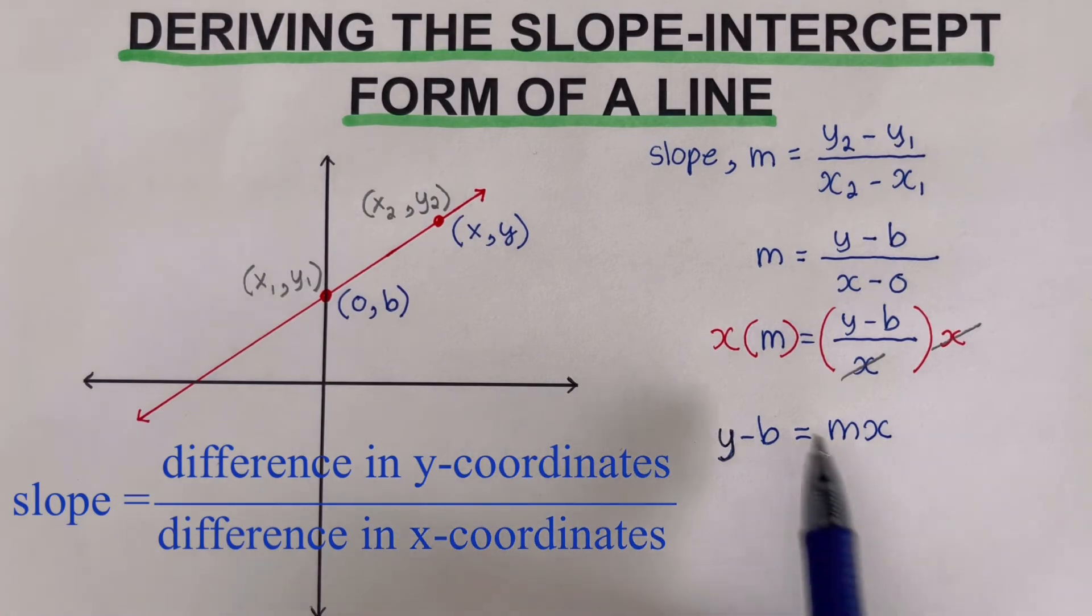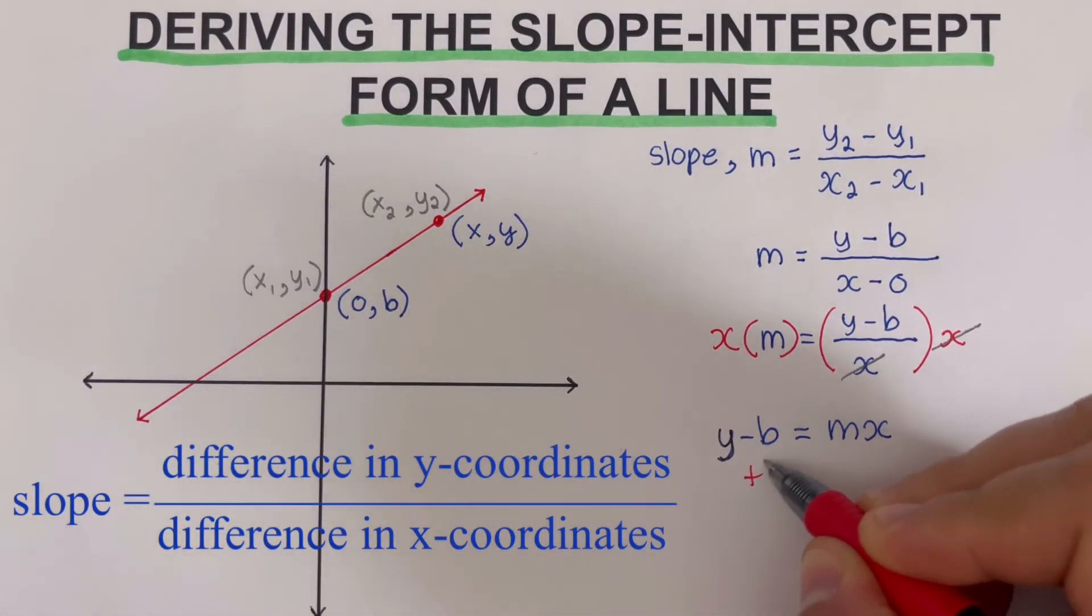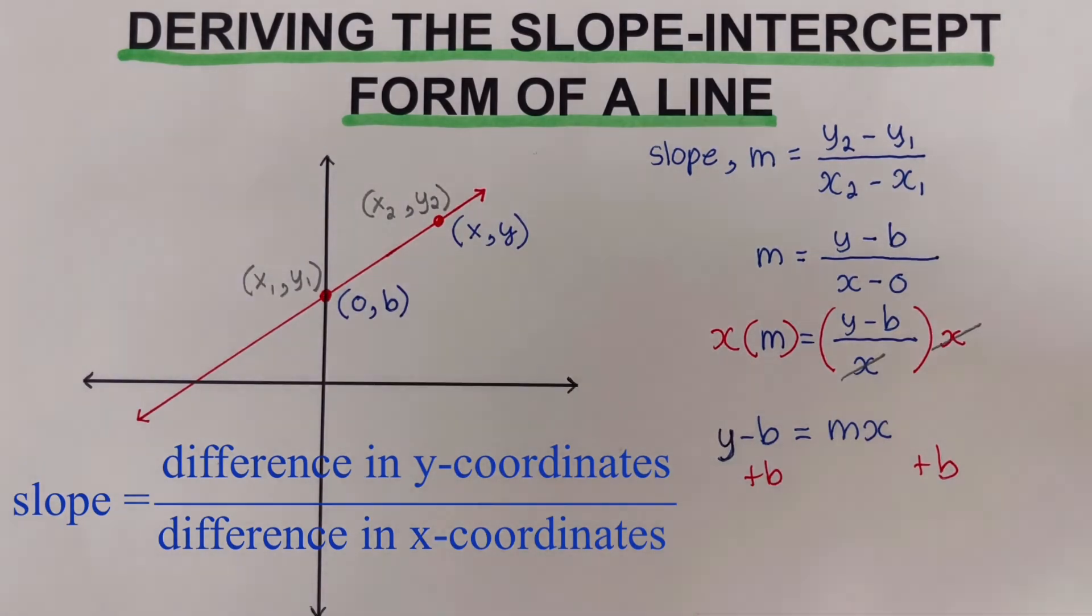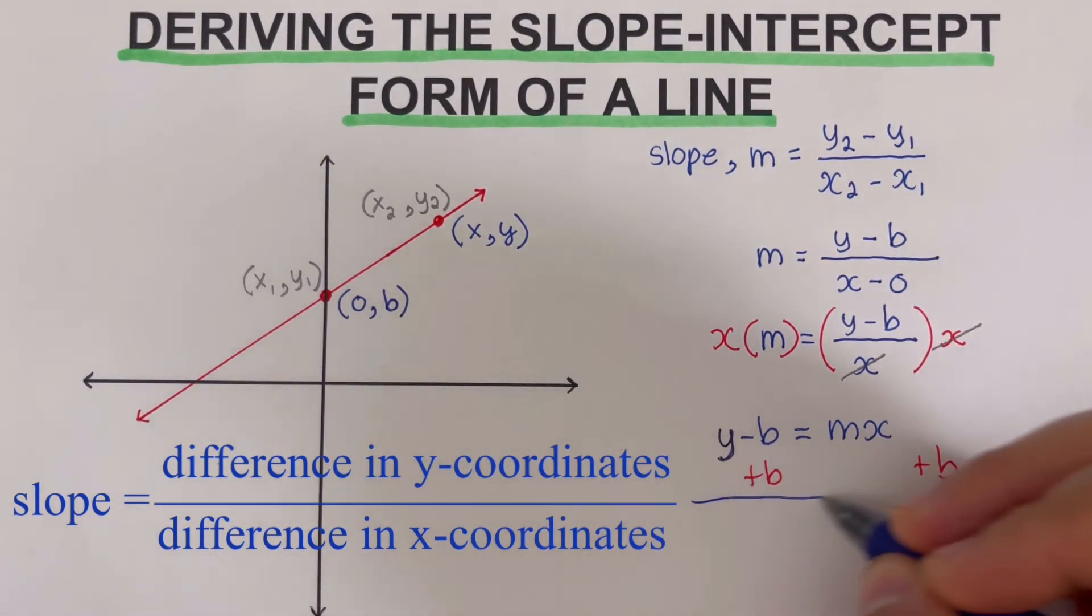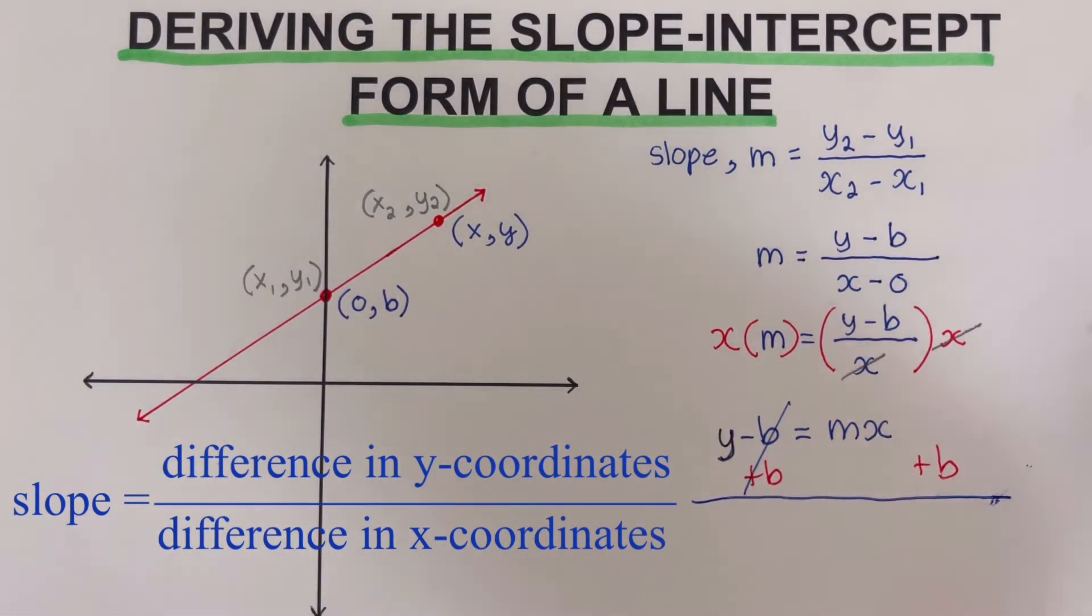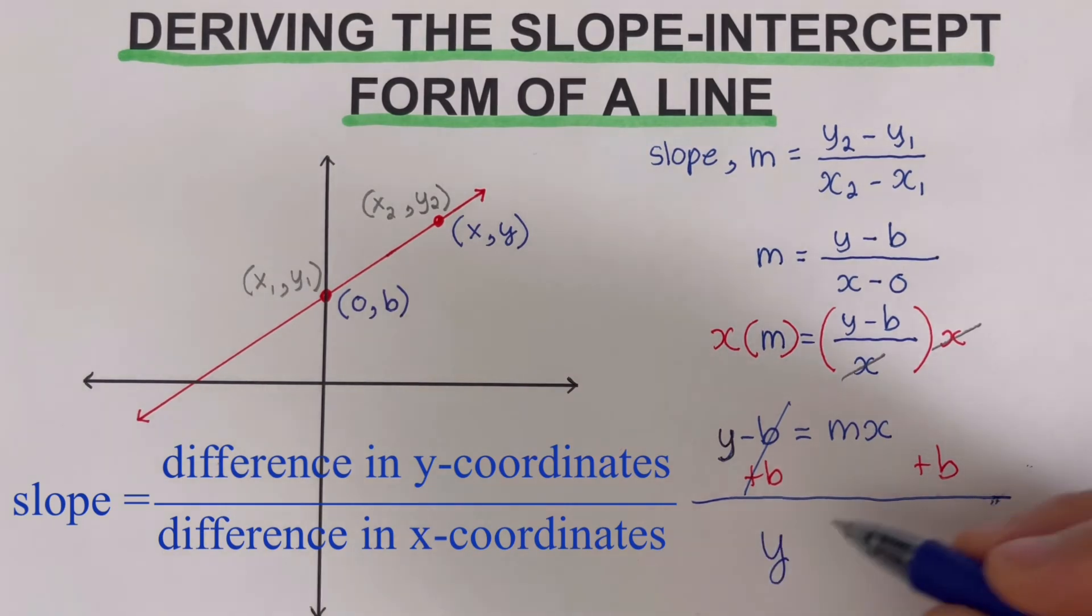Or you can write mx first, and then that's equal to y minus b. So from here, we can again isolate y by itself. So we're going to add b to both sides, plus b. And so we get the final equation would be y equals mx plus b.